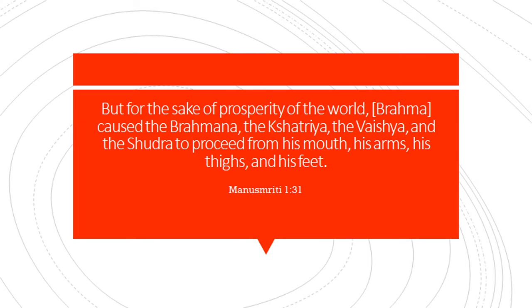In the Hindu system, they believed that the Brahmanas were created by Brahma, the god of creation in Hinduism, from his mouth. The Kshatriyas were created from his hands, the Vaishyas from his thighs, and the Shudras from his feet — the lowest part of the body — which metaphorically represents the lowest one can go.